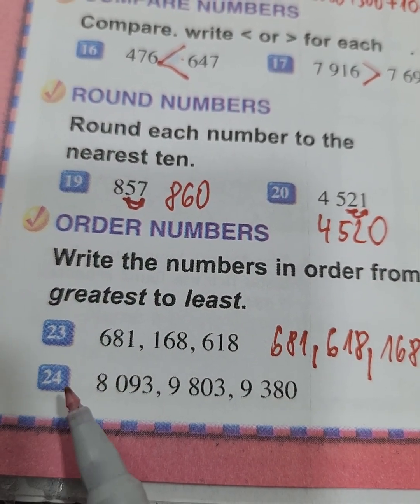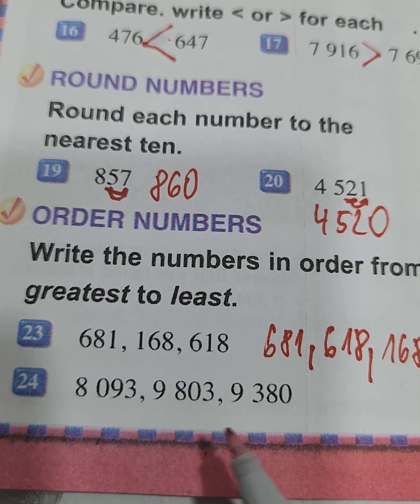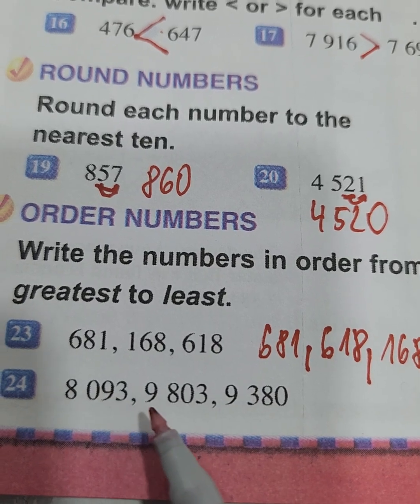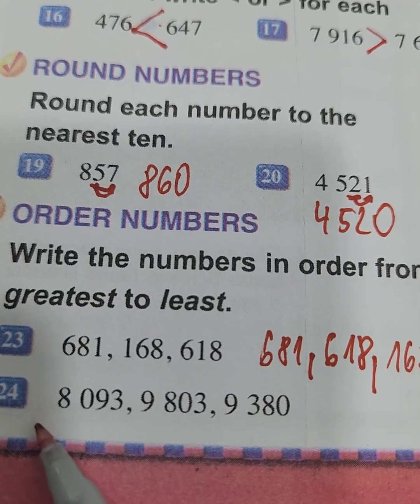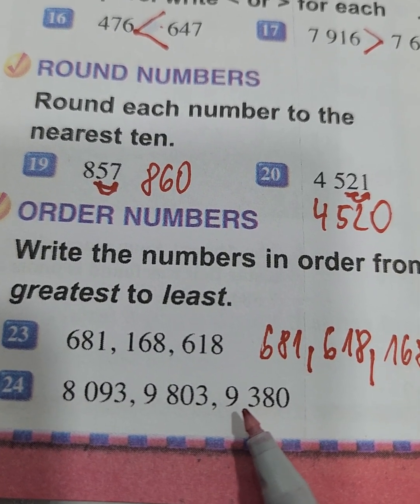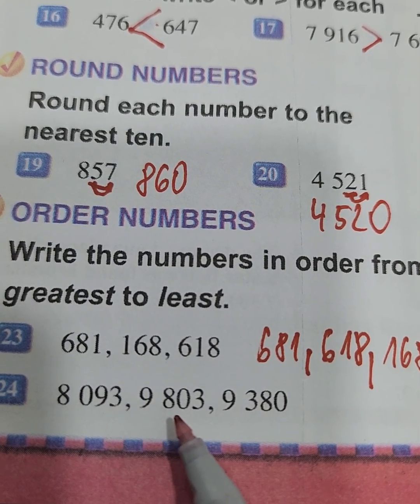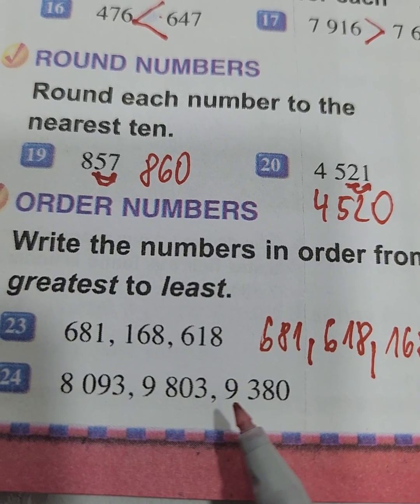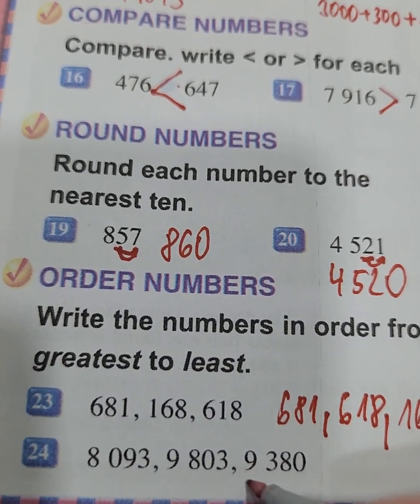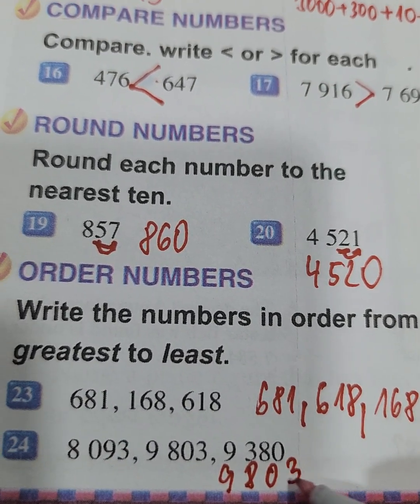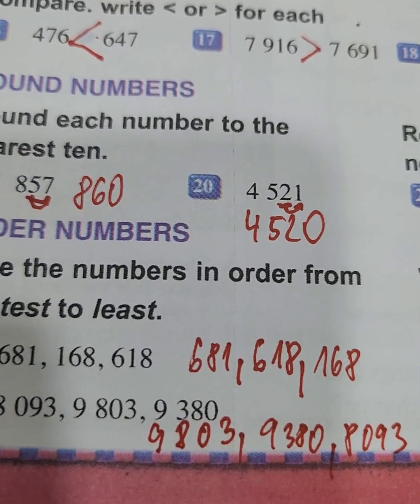The next task, number 24. We have here numbers 8093, 9803, and 9380. As you can see, we are looking at the first digit, which is in the place of thousands. We have 8, 9, 9. Which one is the greatest? It's 9. So the greatest number will be 9803. After it will be 9380, and the least is 8093.